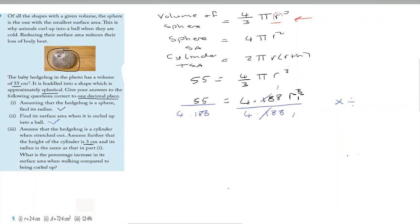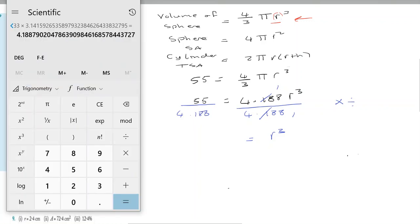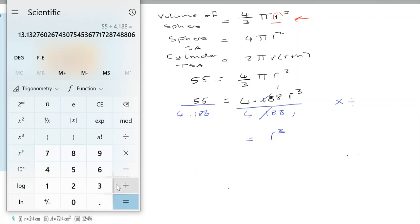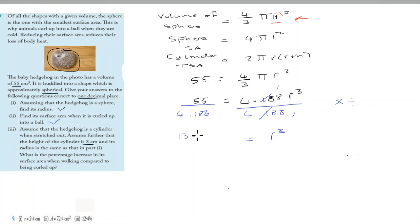So that simplifies to r cubed equals 55 divided by 4.188, which gives us approximately 13.132.